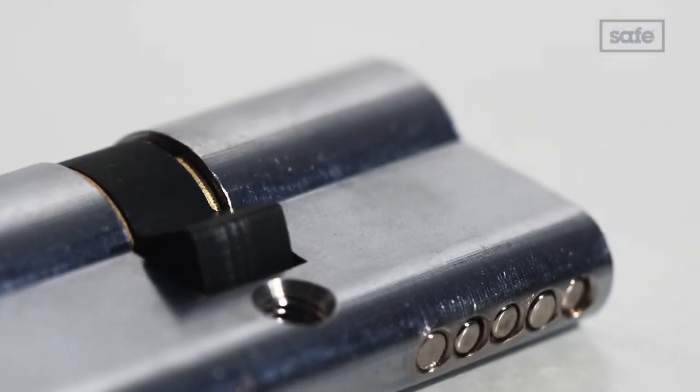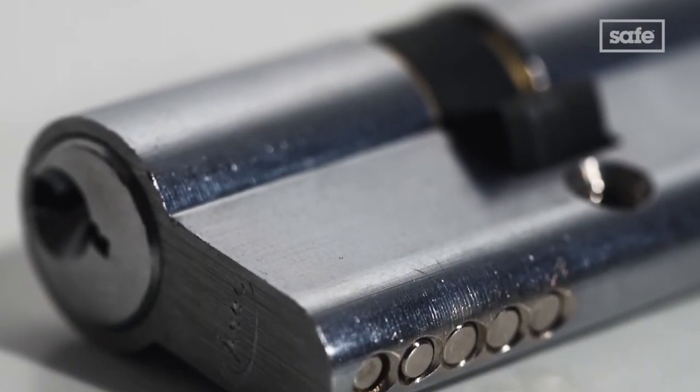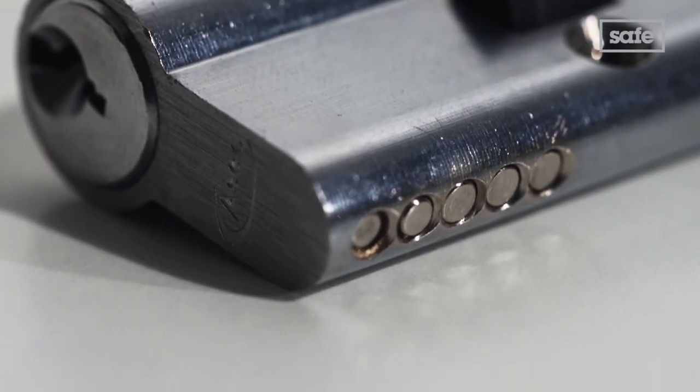As both internal and external measurements are the same, this is known as an equal cylinder. If the measurement for each side had been different, it would be an offset cylinder.